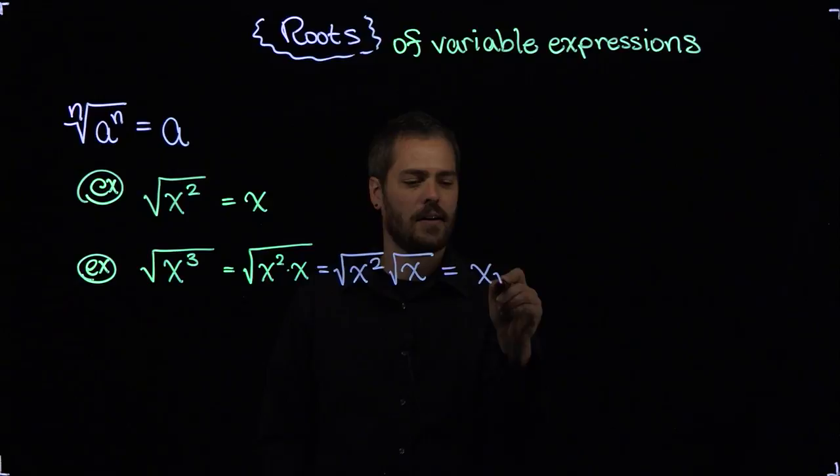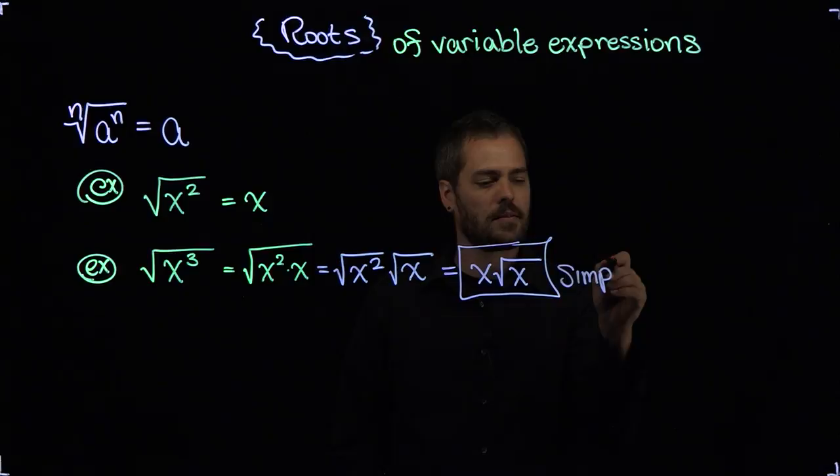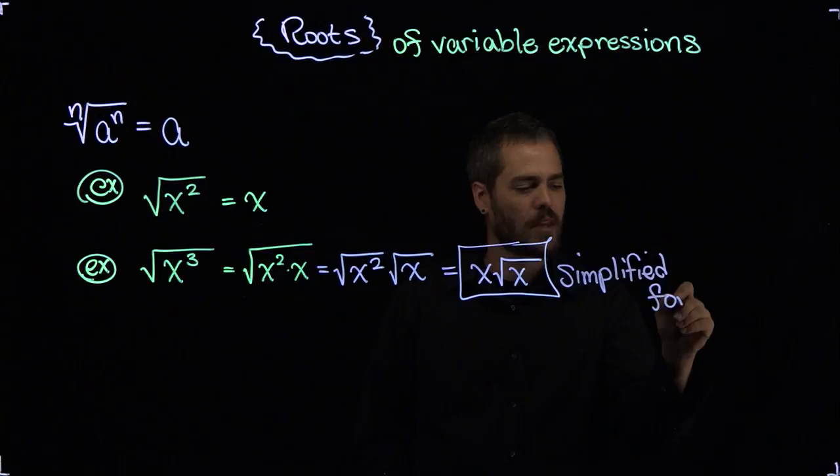So now this is just x square root of x. I'm going to put a box around that and we'll call this the quote simplified form.